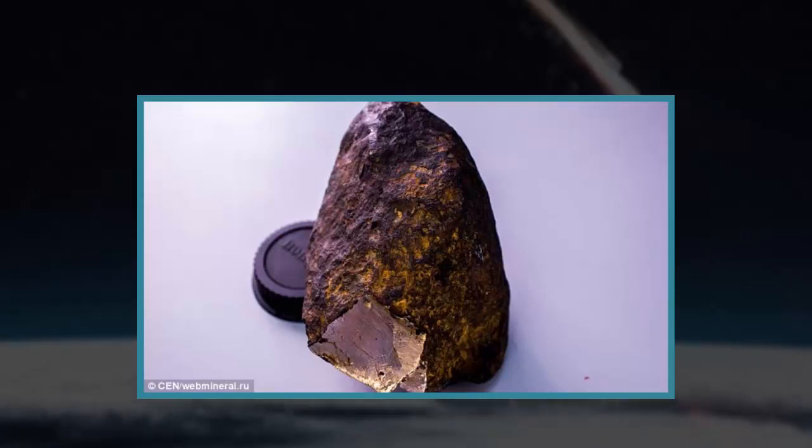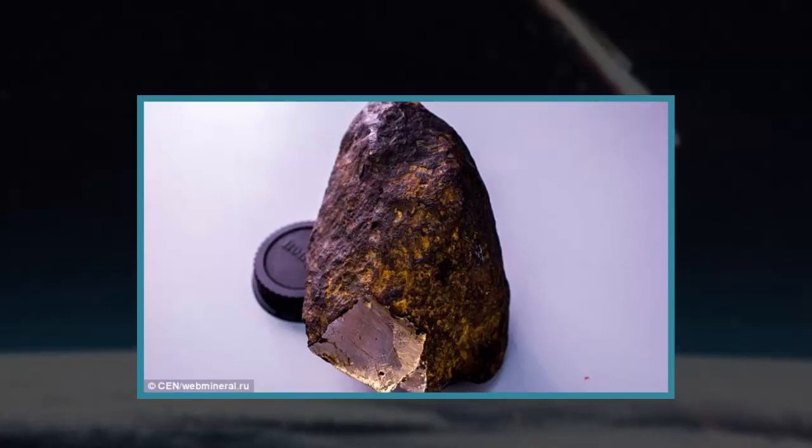The physical properties of wakatite have been difficult to assess due to the tiny sizes of the grains. However, the researchers believe it has a yellow and transparent phase with a metallic sheen and is as hard as a diamond.